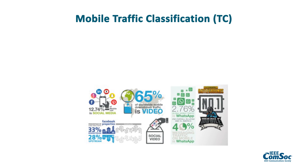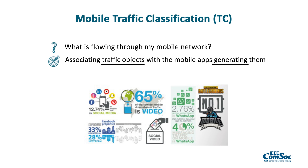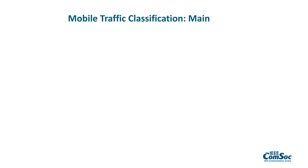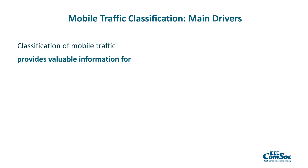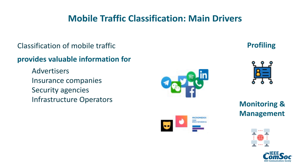To shed light on the nature of mobile traffic, we want to answer the following question: what is flowing in my mobile network? To this aim, mobile traffic classification allows us to associate traffic objects with the mobile apps generating them. Indeed, mobile traffic classification provides valuable information for several stakeholders like advertisers, insurance companies, security agencies, or infrastructure operators.